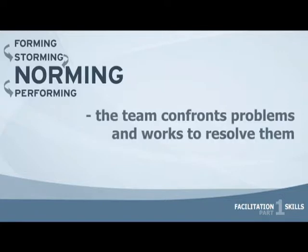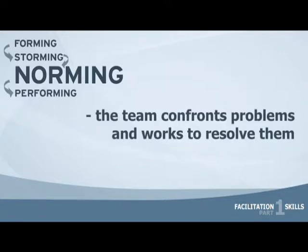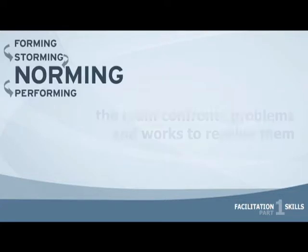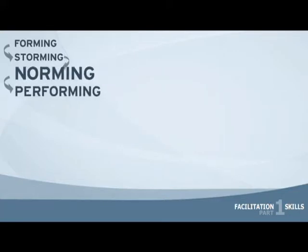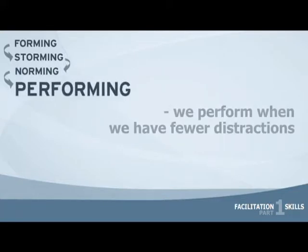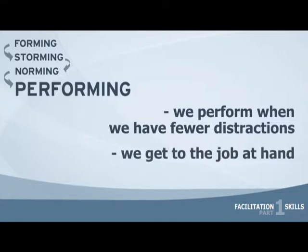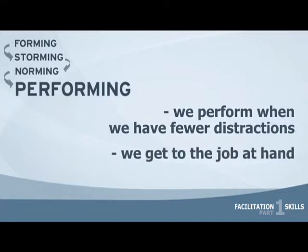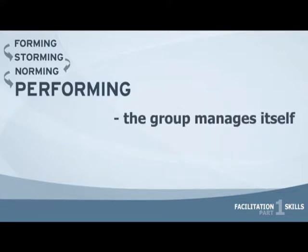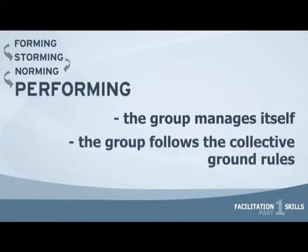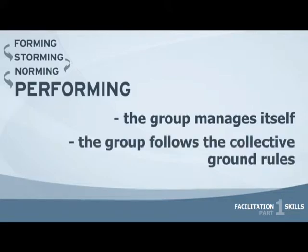In the norming stage, the team confronts problems and works to resolve them. The main goal is to get into the performing stage and become productive. We perform when we have fewer distractions and really get to the job at hand. The group manages itself and follows the collective ground rules, and everyone feels a sense of collective ownership — not just the facilitator.